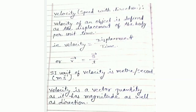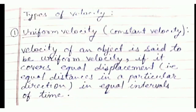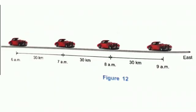Next are the different types of velocity. The first one is uniform velocity or constant velocity. The velocity of an object is said to be uniform if it covers equal displacement — that is equal distances in a particular direction — in equal intervals of time. As shown in the figure, a car moves over a horizontal straight road and covers 30 kilometers in each hour. This shows the displacement of the car in each hour is equal, so the velocity of the car is uniform.